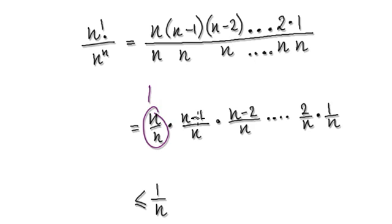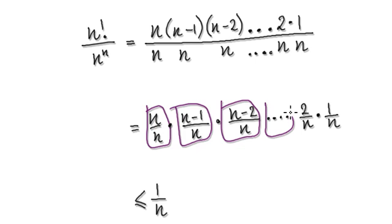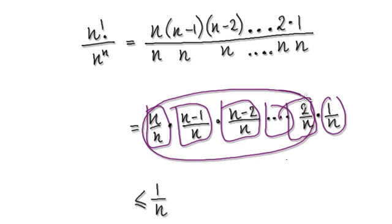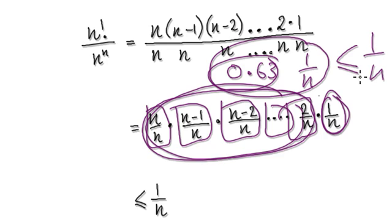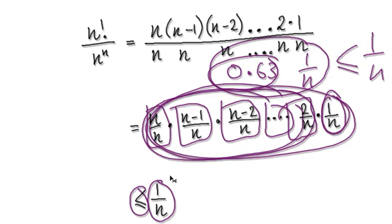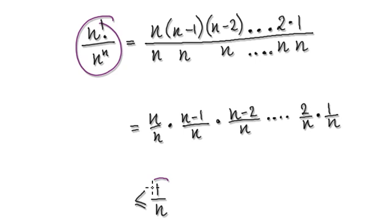So this number here is 1 times — let's imagine this to be 0.9. So 1 times 0.9 is still going to be 0.9, and this whole thing will be 0.9 times a number less than 1, times a number less than 1. So the whole thing collectively will be less than or equal to 1 over n. So we can say that this whole thing here will be less than or equal to 1 over n.